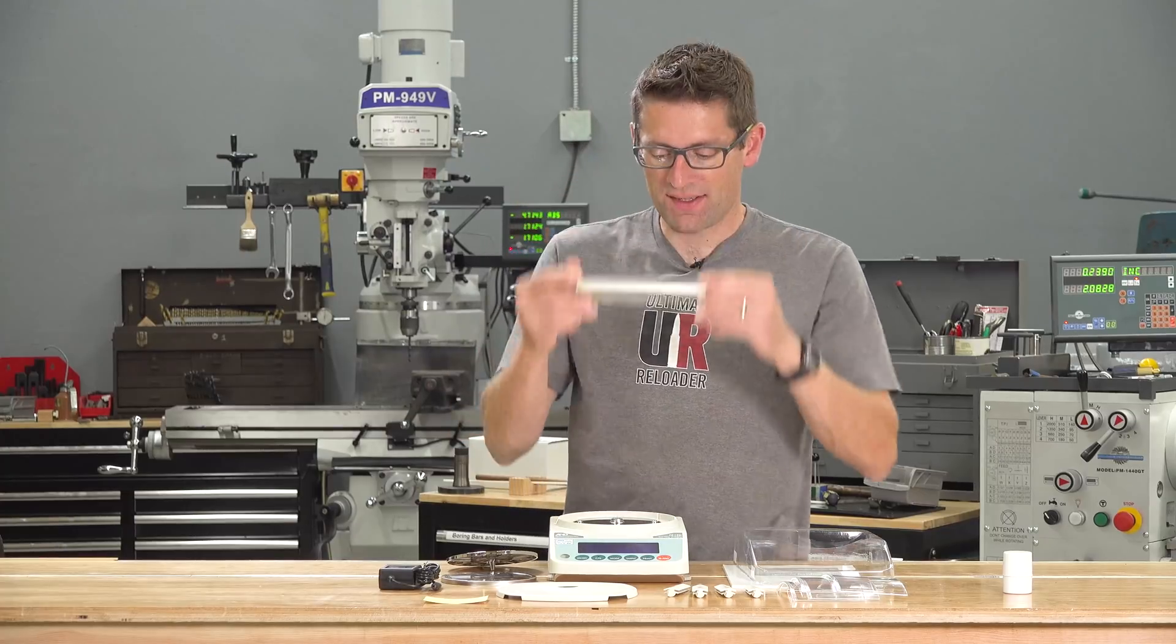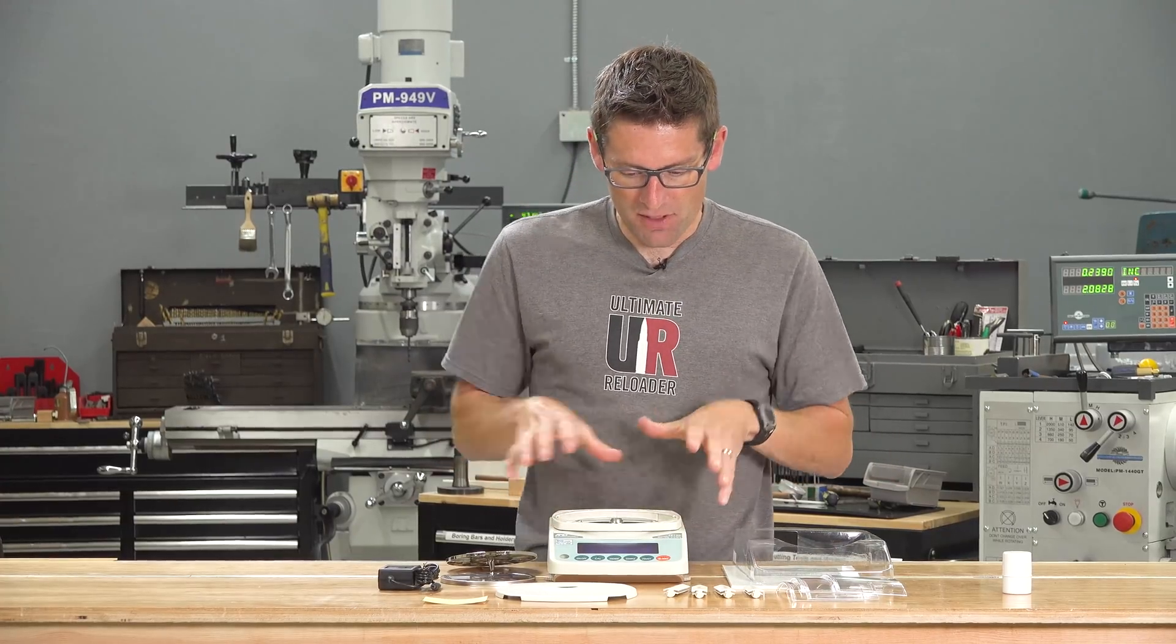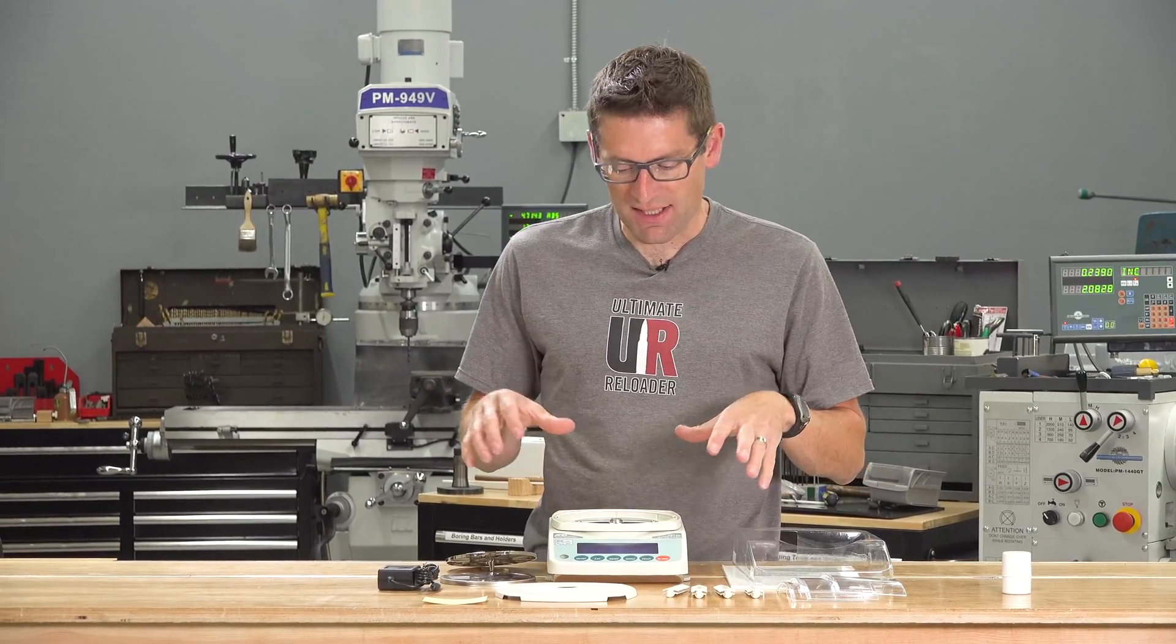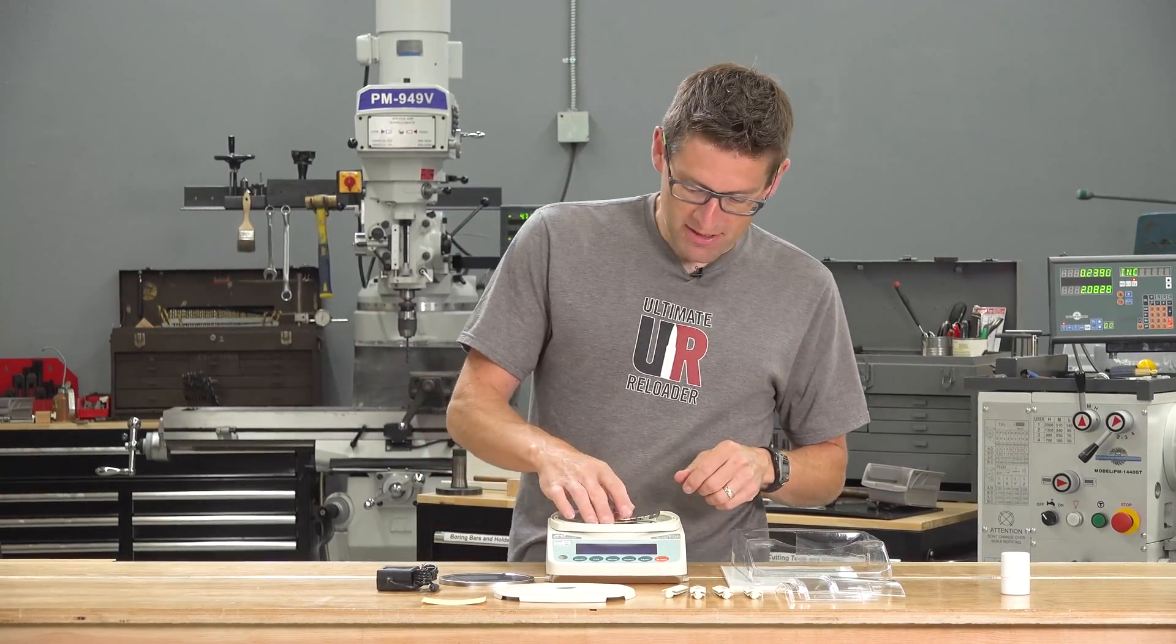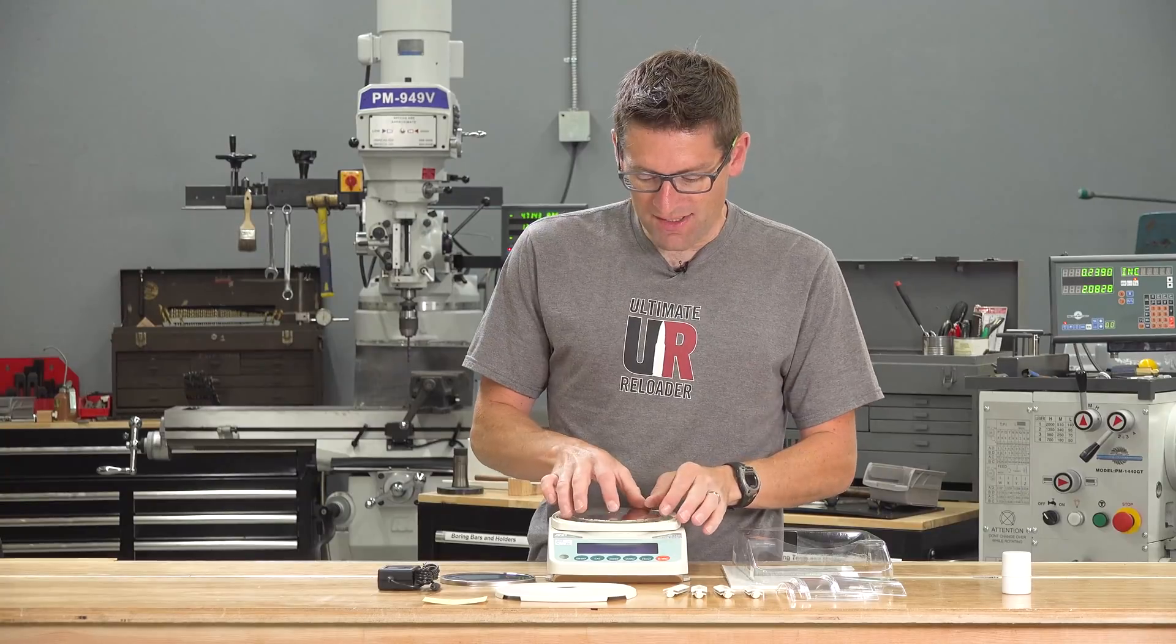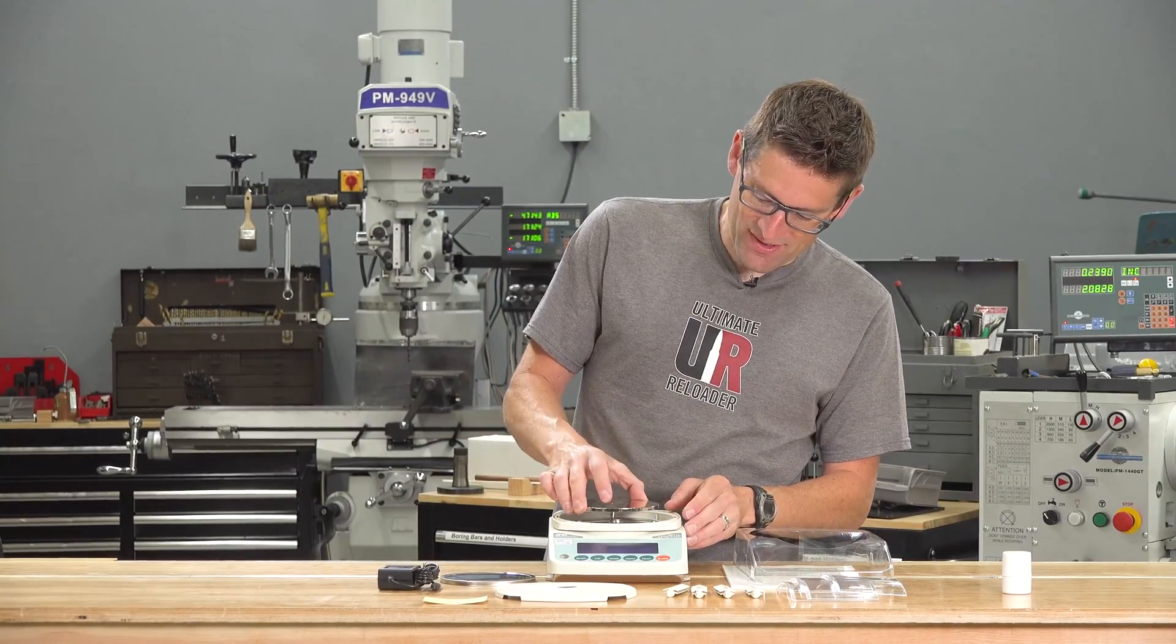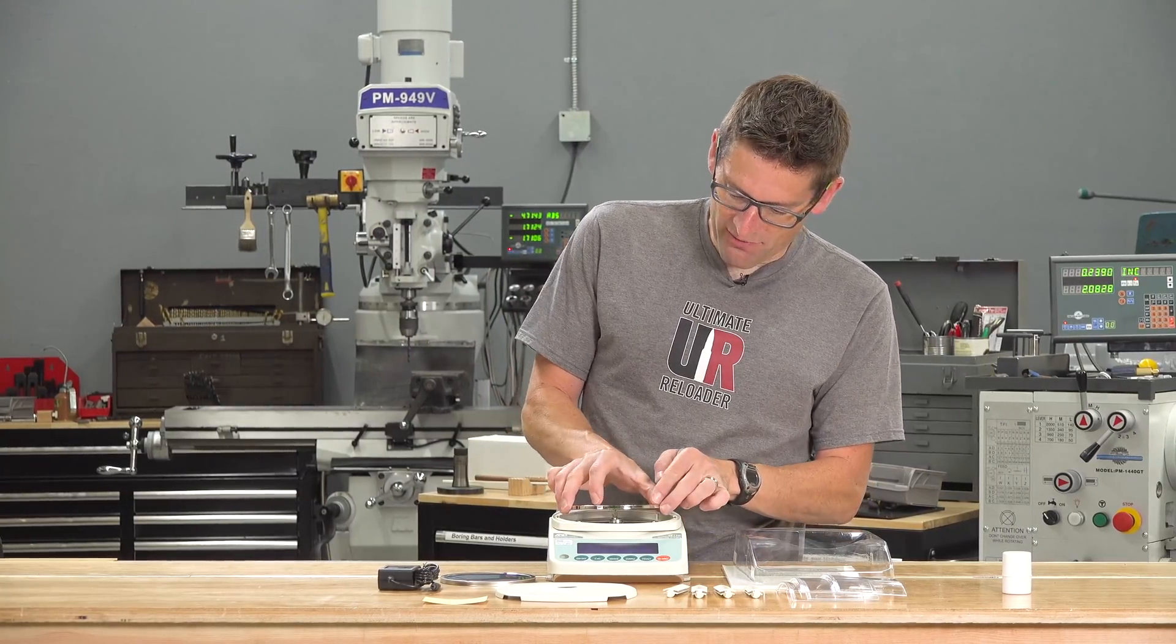This is the base of the whole enclosure assembly. And again, this is to keep air currents from interfering with the pan and the corresponding measurements, because this is such a precise scale that you have to be careful about that.